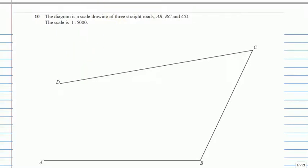Question 10, the second last question of this paper. The diagram is a scale drawing of three straight roads AB, BC, and CD. The scale is 1 to 5000. The roads in real life are very large and on paper they are shown very small. To go back to the real size we multiply by 5000, and to go from real back to paper size we divide by 5000.